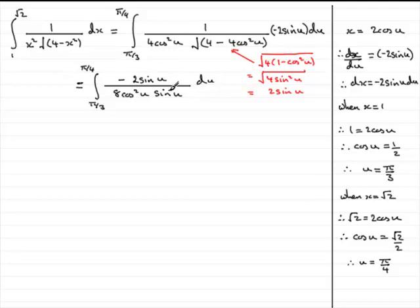Now, we can clean this up because, as you can see, the sine u's cancel. And, we can cancel out the 2 and the 8. So, I'll just do that in green for you. The 2 goes into the 2 once there. And, 2 goes into the 8 4 times. So, when we write this out again, just cleaned up. What we've got, we can pull out the minus 1 quarter out the front of the integral. Minus 1 quarter. And, then we've got the integral from pi upon 3 to pi upon 4. And, we've got 1 over cos squared u. Well, 1 over cos squared u is the same as sec squared u. So, put that there. Sec squared u du.